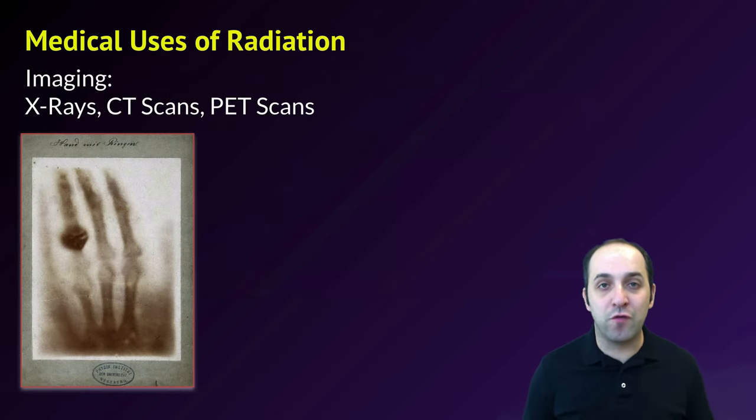There are of course many medical uses of radiation, and one of the major ones is in imaging. So things like X-rays, CAT scans, and PET scans, these all use radiation in order to generate images of processes inside of the body. X-rays were discovered by Wilhelm Röntgen at the end of the 1800s, and he immediately understood that they could be used for medical imaging. This is actually an image of his wife's hand that he took with his early X-ray generating technology.